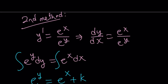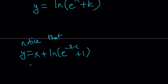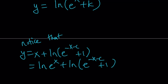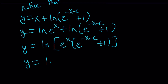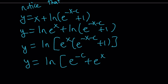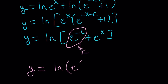Let's go ahead and work on that expression. Notice that y equals x plus ln of (e to the power negative x minus c plus 1). We can write x as ln of e to the power x, so this becomes ln of e to the power x plus ln of (e to the power negative x minus c plus 1). Since we're adding two ln's, we can combine them into the ln of the product: ln of [e to the power x times (e to the power negative x minus c plus 1)]. Distributing e to the power x — when you multiply e^x by e^(negative x minus c), the x's cancel (x minus x is 0), giving e to the power negative c plus e to the power x. Since c is a constant, e to the power negative c is also a constant — we can just call it k. So our solution becomes y equals ln of (e to the power x plus k).